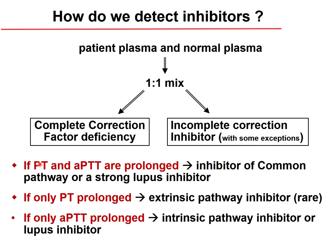If both prothrombin time and APTT are prolonged, there is possibly an inhibitor of the common pathways or a strong lupus inhibitor. If only PT is prolonged, the inhibitor involves the extrinsic pathway (very rare). If only APTT is prolonged, there are inhibitors of the intrinsic pathway, or a lupus inhibitor or anticoagulant is present.